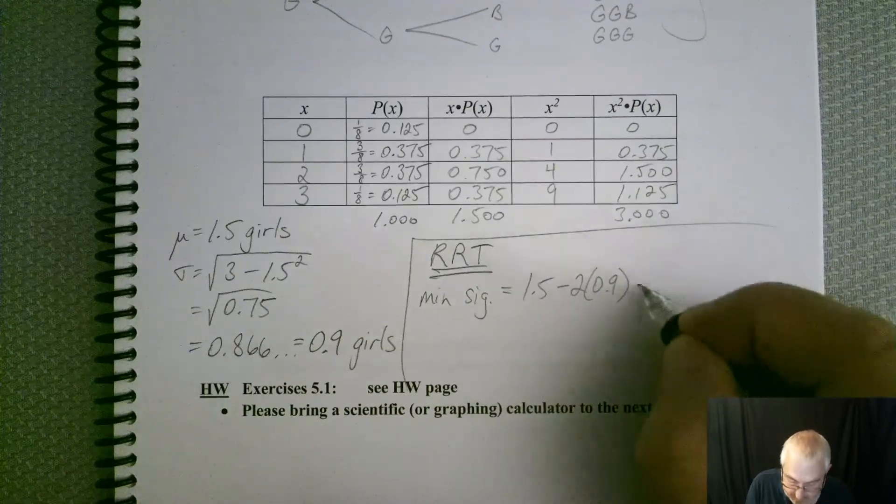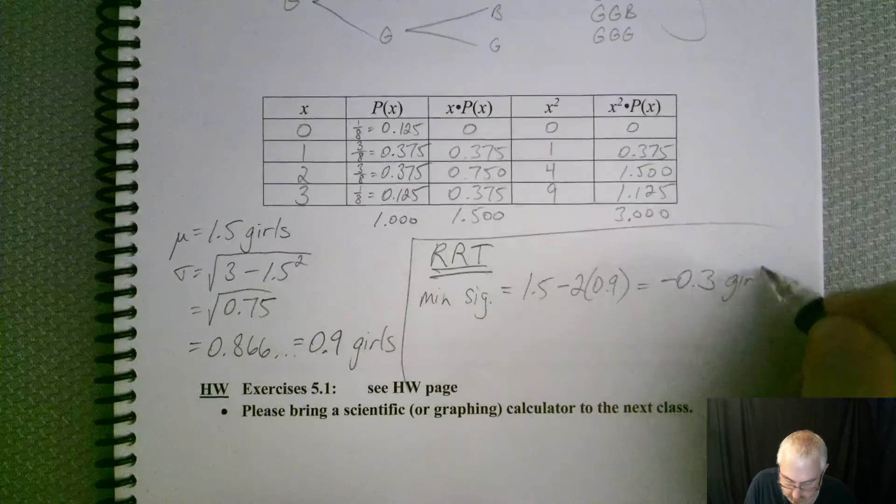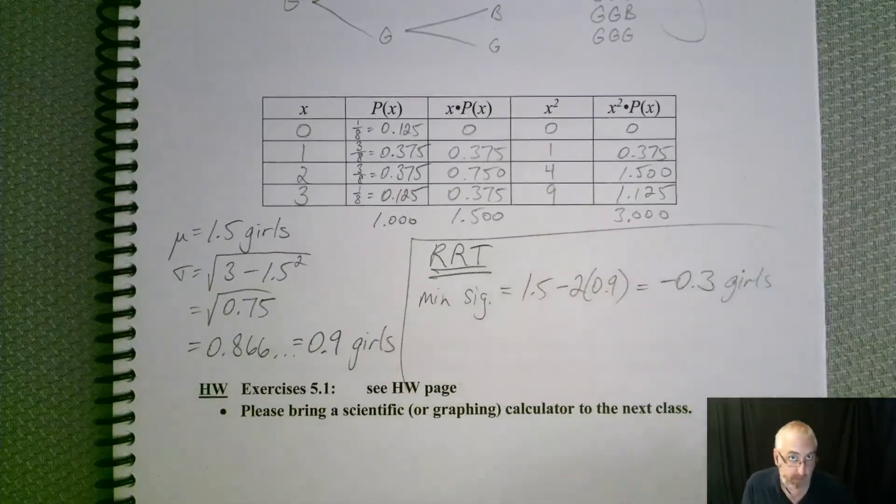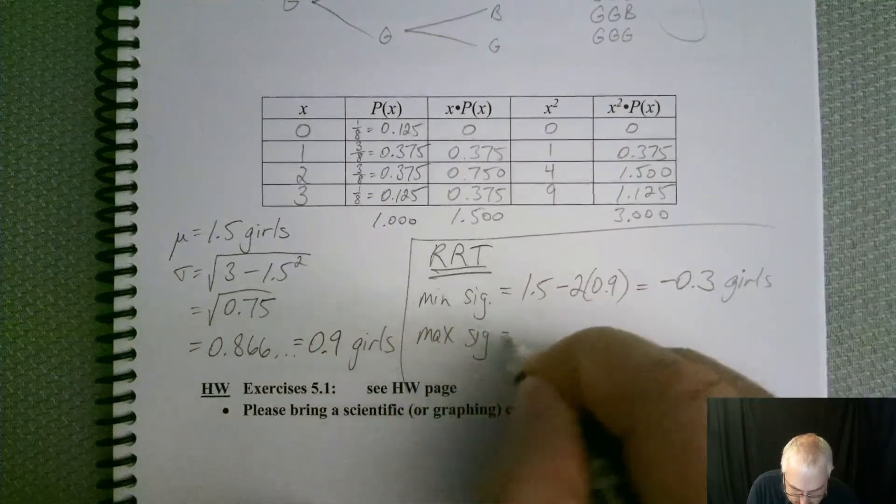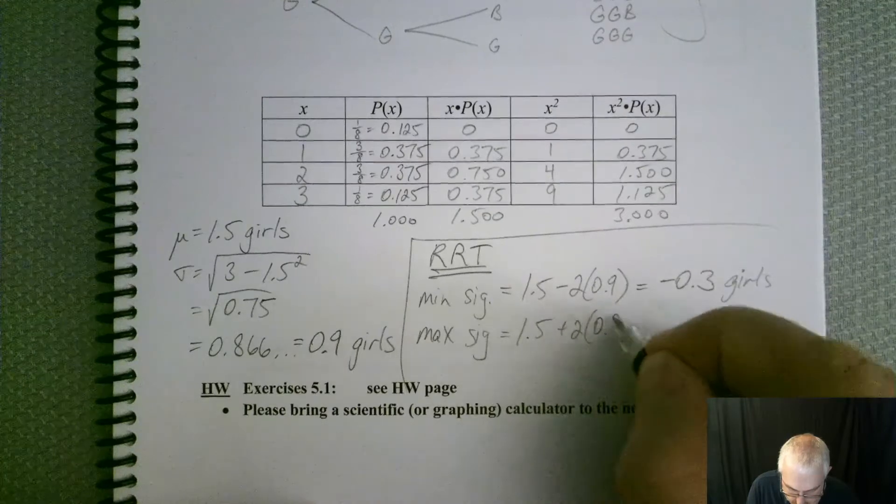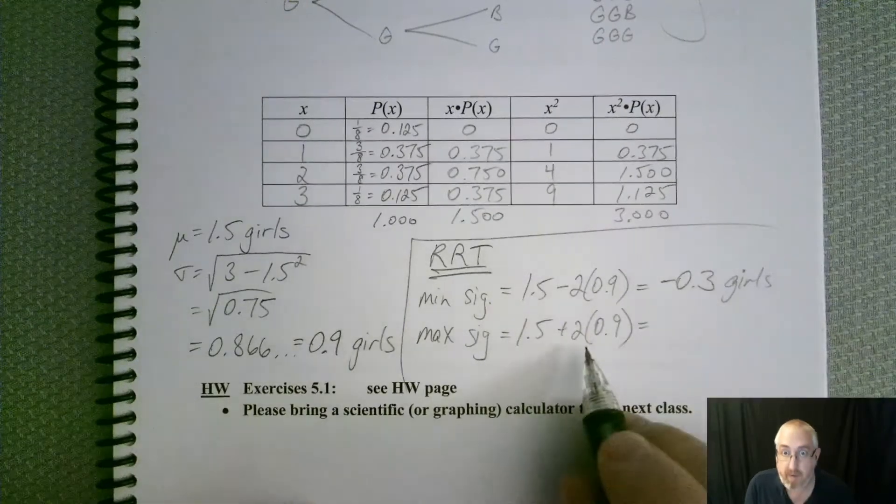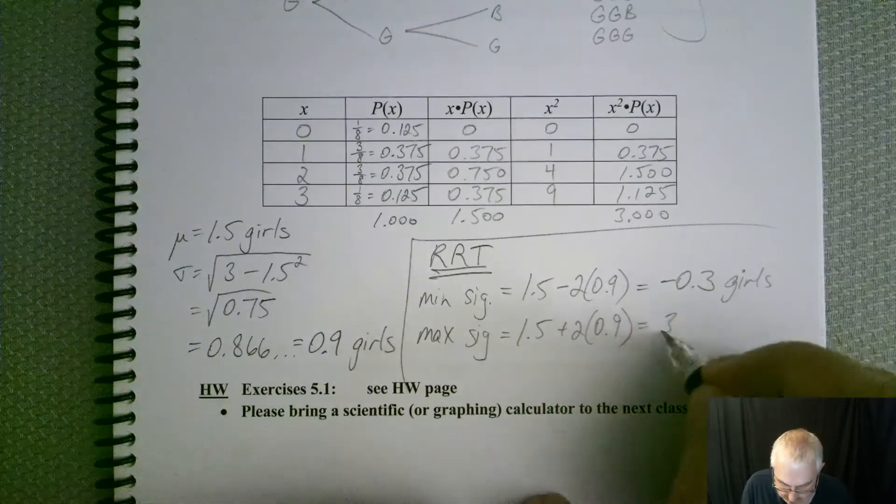So this should be a negative 0.3. And don't forget those units. I'll be a stickler. And then the max. So 1.5 plus 2 times that, so 1.8, and that looks like 3.3.